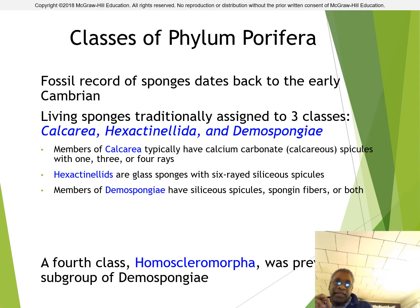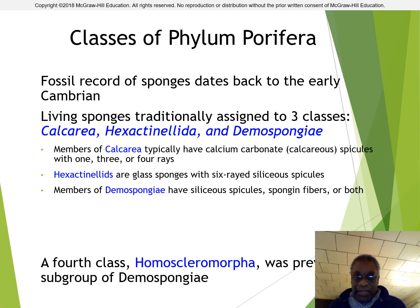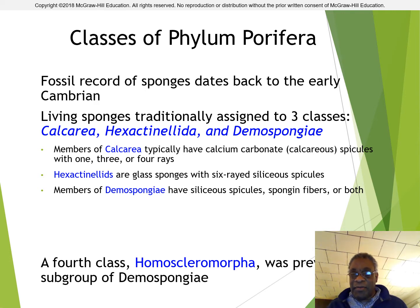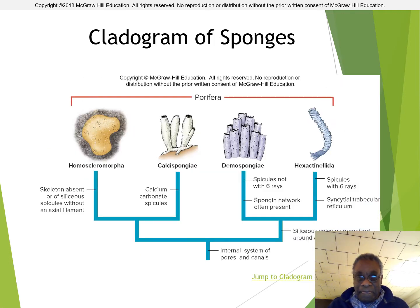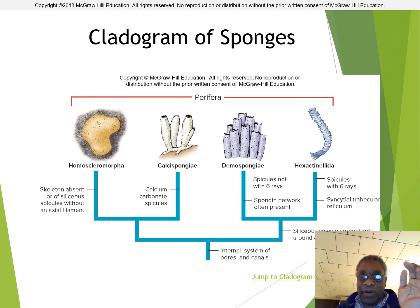There is a fourth class, Homoscleromorpha, which used to be a subgroup of Demospongiae, but we won't really talk about them. If you look at this grouping, you can basically see that Demospongiae and Hexactinellida are more closely related to each other than they are to Calcispongiae.